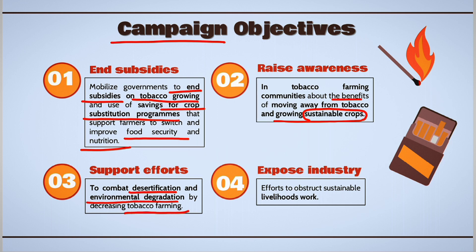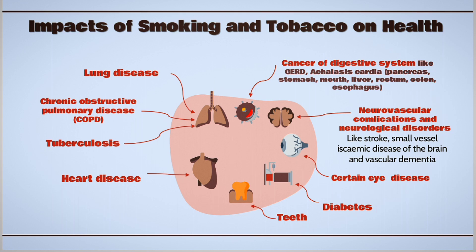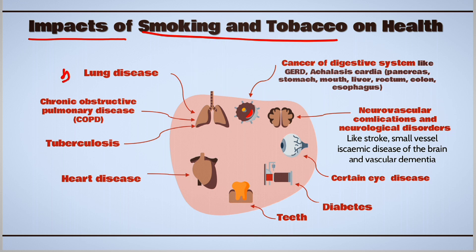This will definitely put effort to support sustainable livelihoods. Now let's see what are the impacts of tobacco and smoking on health. Tobacco consumption can cause lung disease, chronic obstructive pulmonary disease, tuberculosis, and heart disease. It can cause staining of tooth enamel, aggravate diabetes, cause certain eye diseases, neurovascular complications, neurological disorders, and cancers of the digestive system.